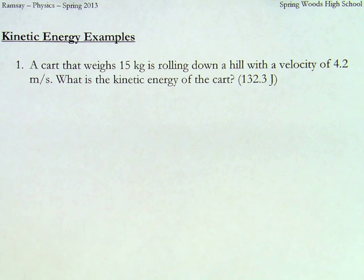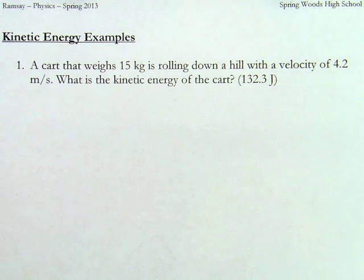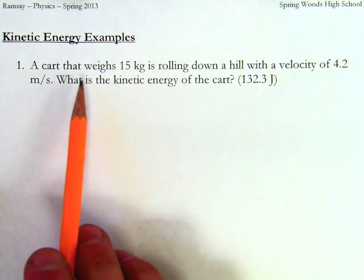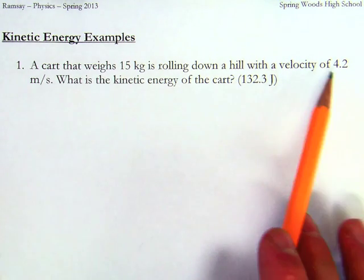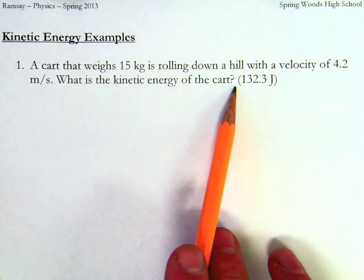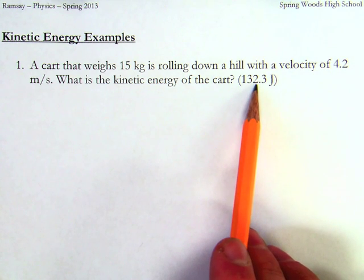Let's take a look at how to solve two problems using the kinetic energy formula. First off, we read problem number one. A cart that weighs 15 kilograms is rolling down a hill with a velocity of 4.2 meters per second. What's the kinetic energy of the cart? Here's our answer, so let's see if we can show our work to find this answer.